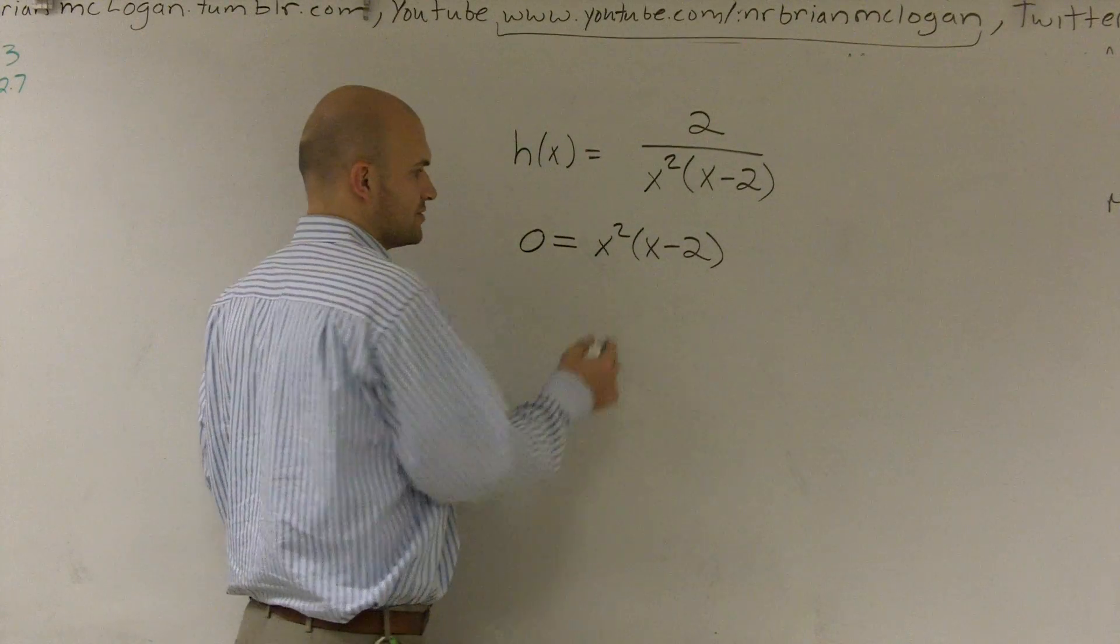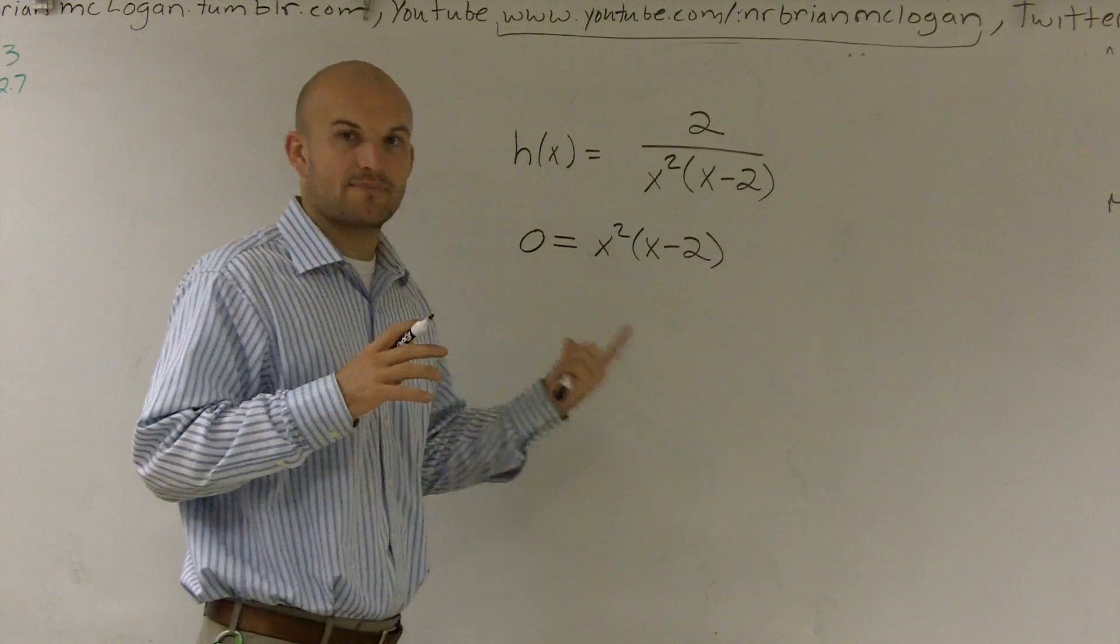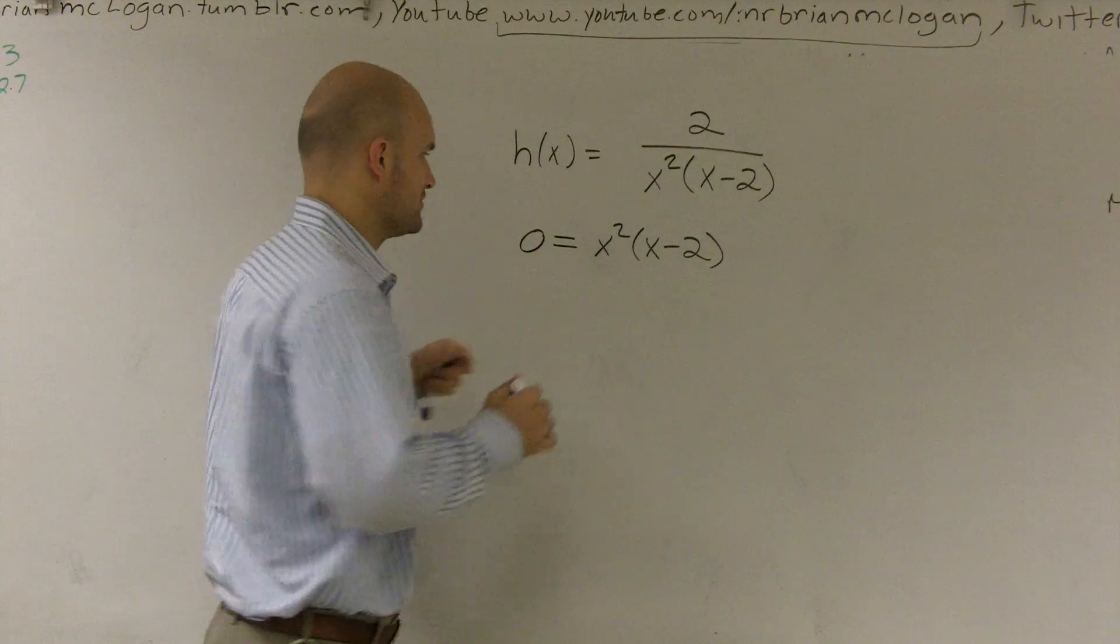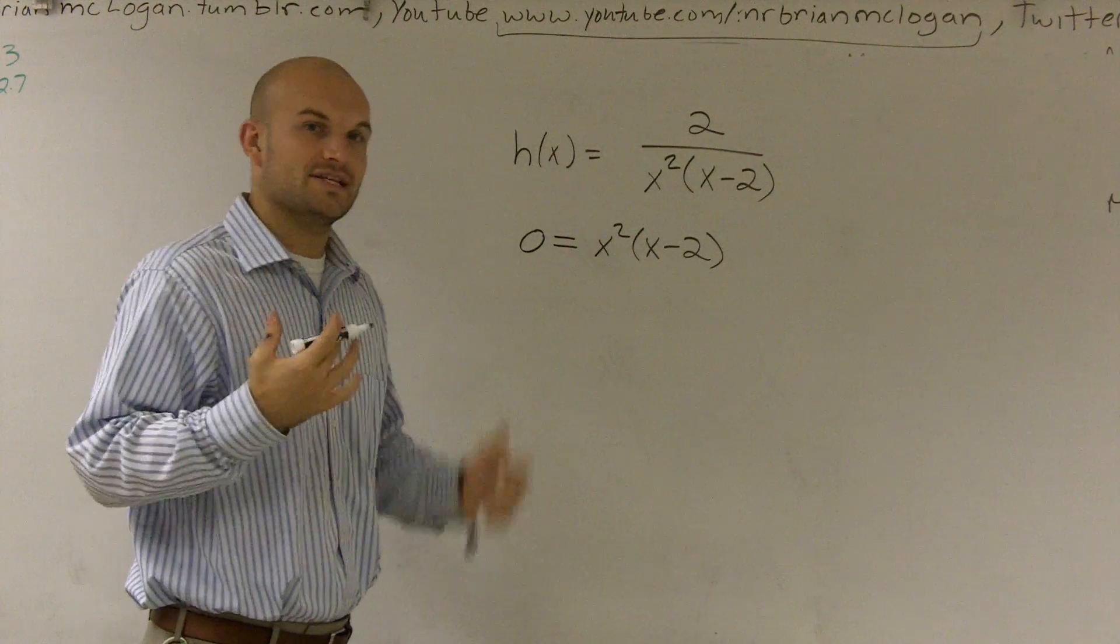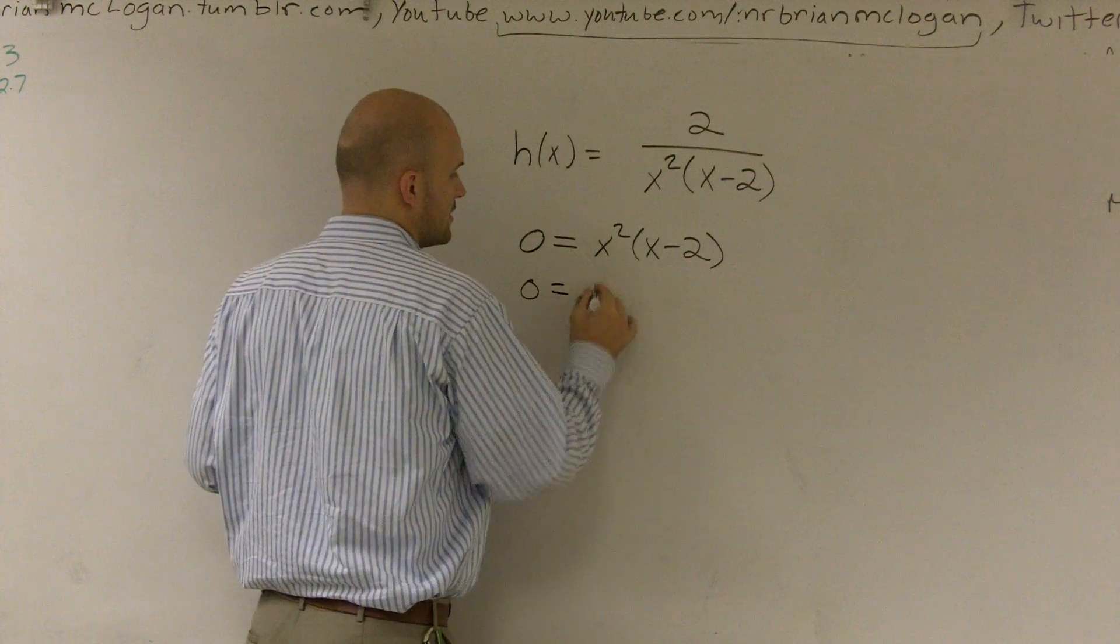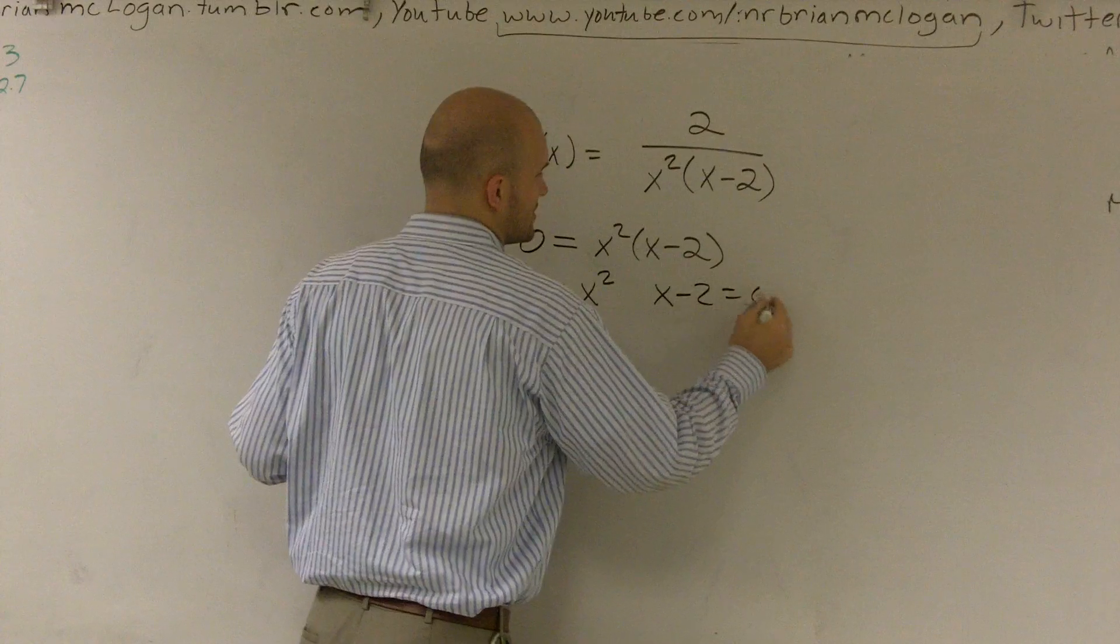So here, I can actually, if you remember, if you can write this as a pair of linear factors, which you can, which would be like x times x all the way through, you have to set each factor equal to 0. So I say 0 equals x squared and x minus 2 equals 0.